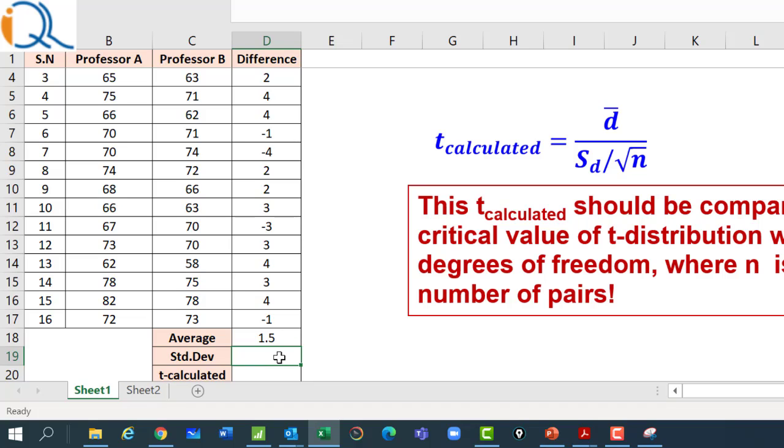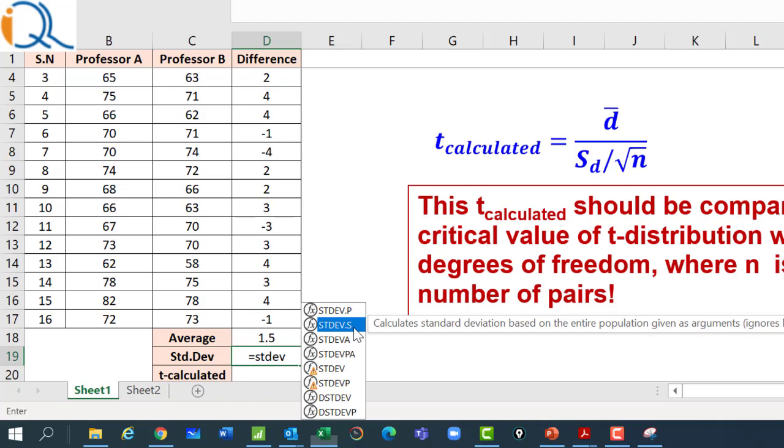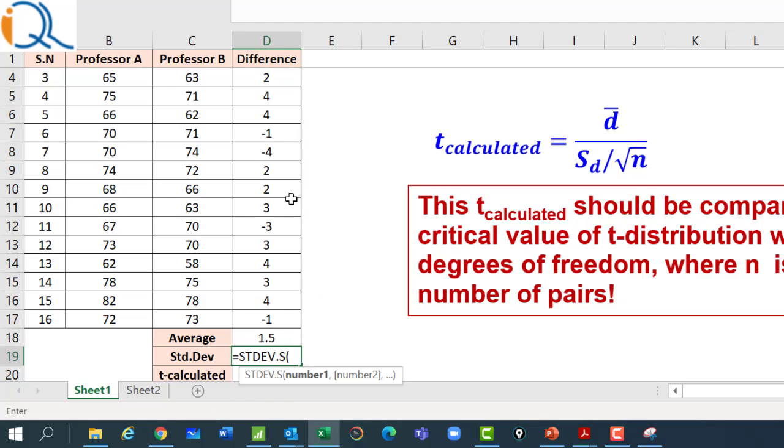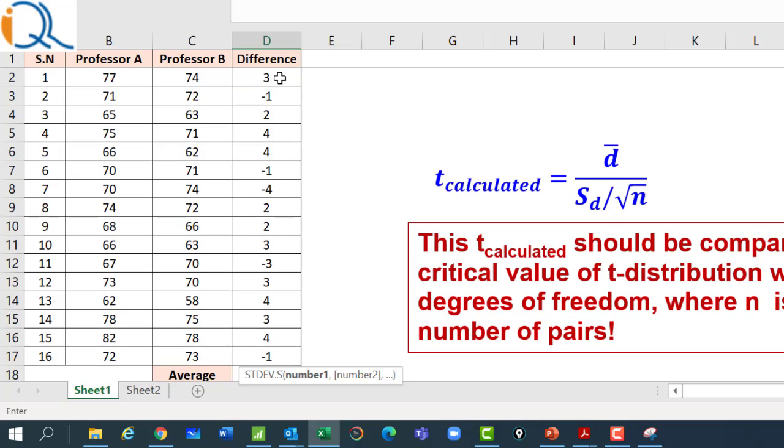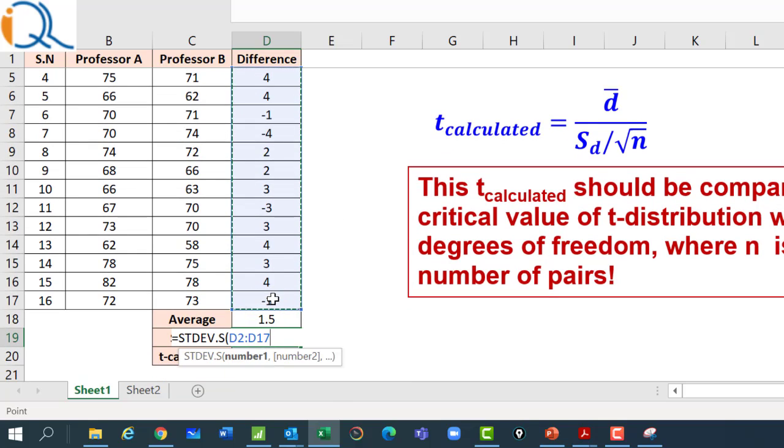Now we need to calculate the average difference first. So the average difference is 1.5. And the standard deviation of this difference, I need to select STDEV.S and then all the differences. Standard deviation of the differences. The standard deviation is 2.633. I can round it off to 2 or 3 decimals. Yeah, 2.633.